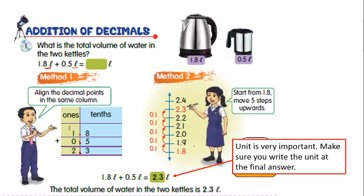Method number two shown here is about the number line. I would like to emphasize that unit is very important — make sure you write the unit in the final answer. 1.8 litre plus 0.5 litre equals 2.3 litre. You have to write down the unit because this question is about volume of water, and the unit for volume of water is litre.